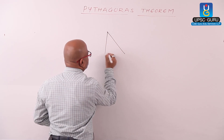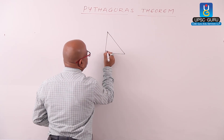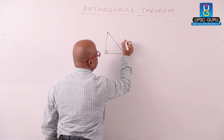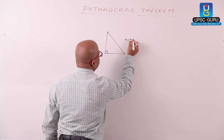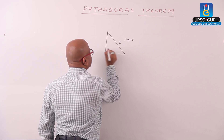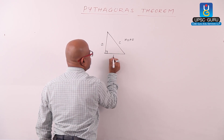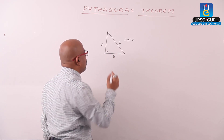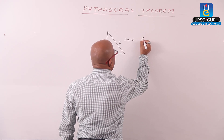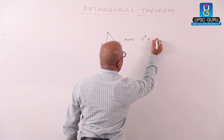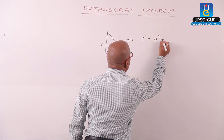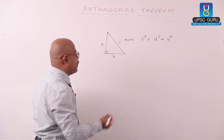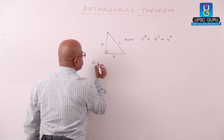Here I draw a right angle triangle with 90 degrees. The side opposite to 90 degrees is called the hypotenuse. We consider this side as c, and the other two sides as a and b. If we apply the Pythagorean theorem, we get: hypotenuse squared, c squared, equals a squared plus b squared.